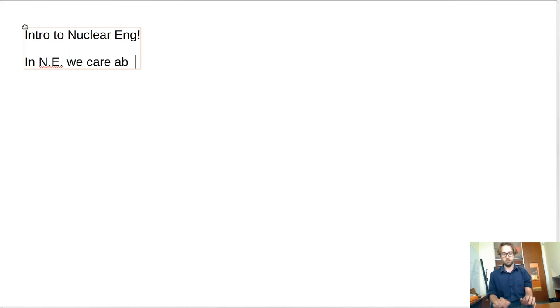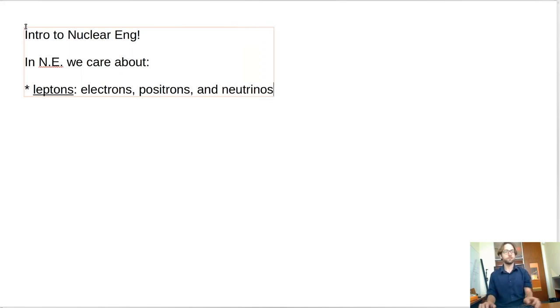So let's define those. We care about leptons. So examples of leptons include electrons, positrons, and neutrinos. These are characterized as being low but nonzero mass. So electrons, positrons, and neutrinos all have very tiny but still nonzero masses.